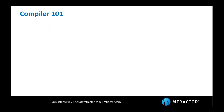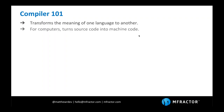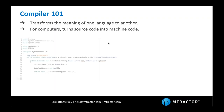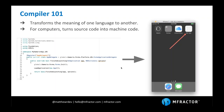Compiler 101: a compiler essentially takes the meaning of one language and transforms it into another. It's essentially a translator for a computer — it turns source code that's readable by a person into machine code that's readable and executable by a machine. So it takes our C# Xamarin application and puts it into the final application deployed onto our device.